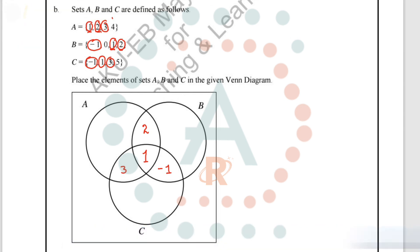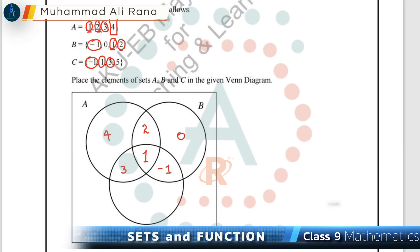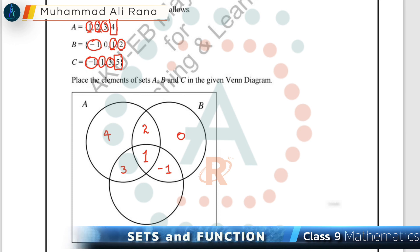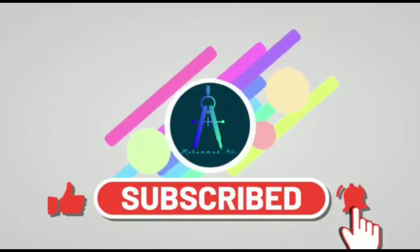The remaining element of set A is 4, which is uncommon with B and C, so it goes in the A-only region. The remaining element of set B is 0, placed in the B-only region. The remaining element of set C is 5, placed in the C-only region. The Venn diagram is now complete. Thanks for watching — don't forget to like, comment, share, and subscribe.